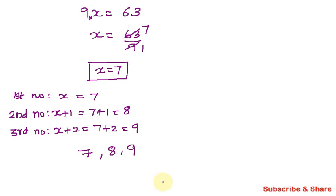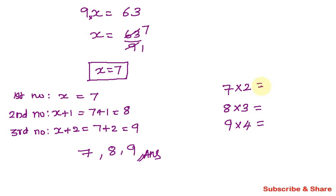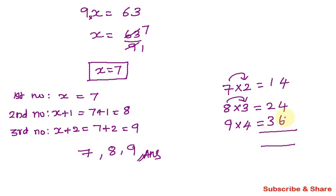So the answer is 7, 8, 9. Let's verify: first number 7 multiplied by 2 is 14, second number 8 multiplied by 3 is 24, third number 9 multiplied by 4 is 36. Adding: 14 plus 24 plus 36 — 4 plus 6 is 10, carry 1; 1 plus 1 plus 2 plus 3 is 7. Total is 74. The answer is accurate and correct.